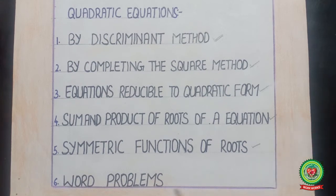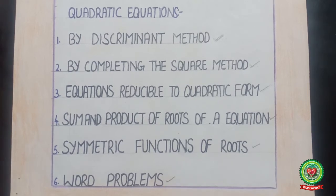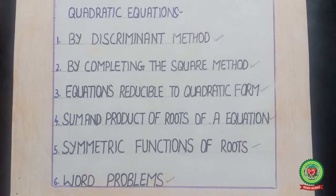Today our last topic is word problems. In word problems, we are going to discuss how to read a statement and from that statement how to make a quadratic equation, then find the value of the missing variable by using the discriminant method, by completing the square method, or by using the factorization method.